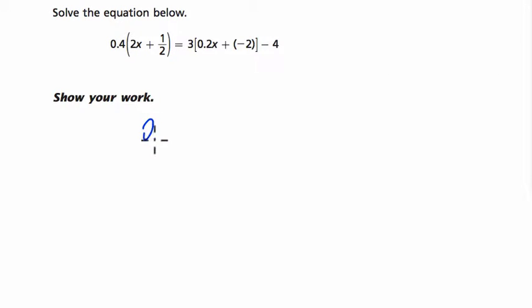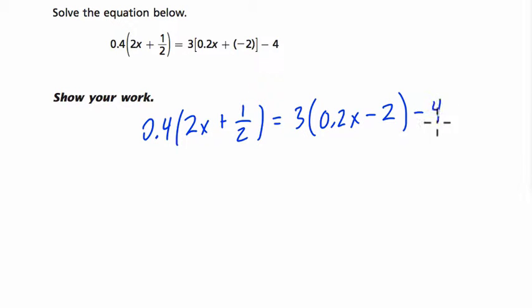So now let's just solve the equation and show our work. I always start by rewriting the whole problem. 0.4 times 2x plus 1 half equals 3. Now they use square brackets here, but it means the same thing. So I'm going to use parentheses. 0.2x plus negative 2. Plus negative 2 is the same as minus 2, so I'm going to rewrite that. Close parentheses minus 4.